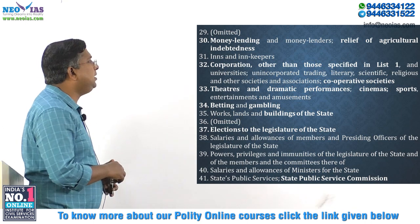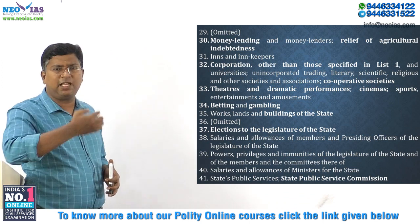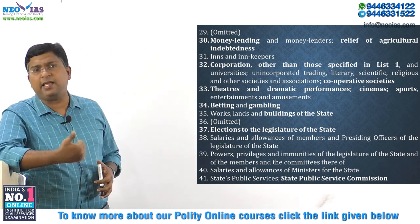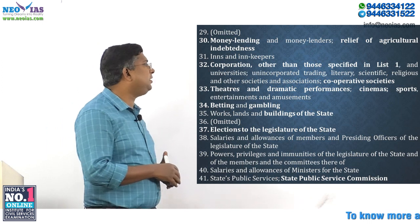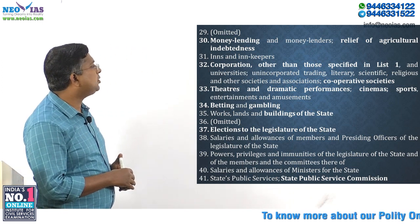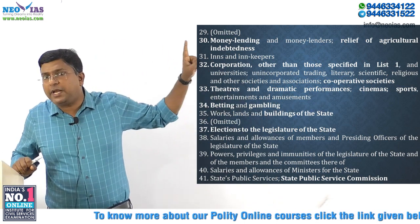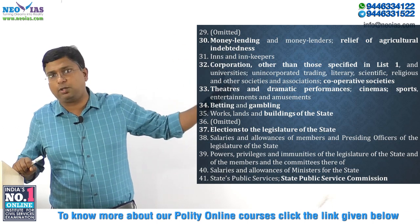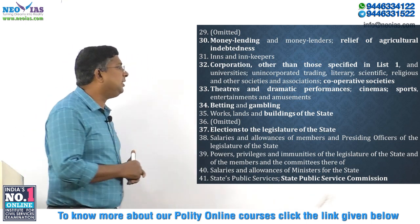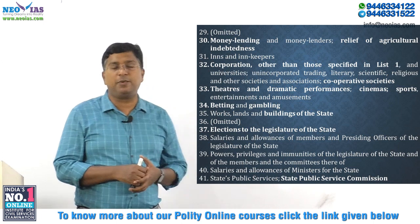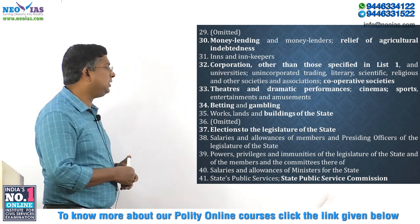Money lending and money lenders, relief of agricultural indebtedness, inns and innkeepers — places where travelers can stay — all come under the State List. Corporations other than those specified in List 1, universities, unincorporated trading, literary, scientific, religious and other societies and associations also come under the State List. Importantly, cooperative societies are under the State List. Theaters, dramatic performances, cinemas, sports, entertainment, amusement, betting and gambling — all come under the State List. Works, lands and buildings of the state also come under the State List.